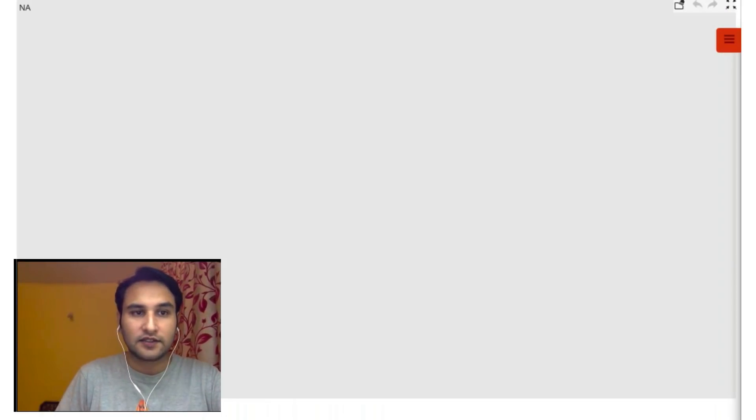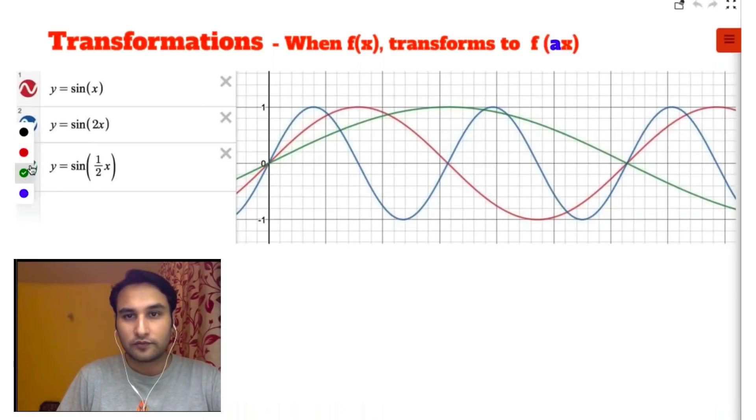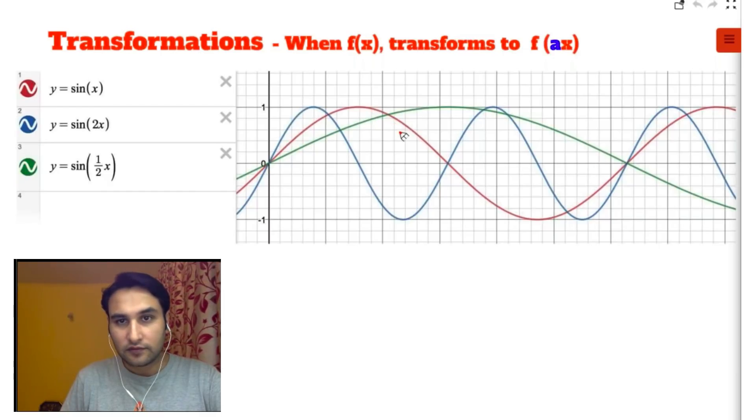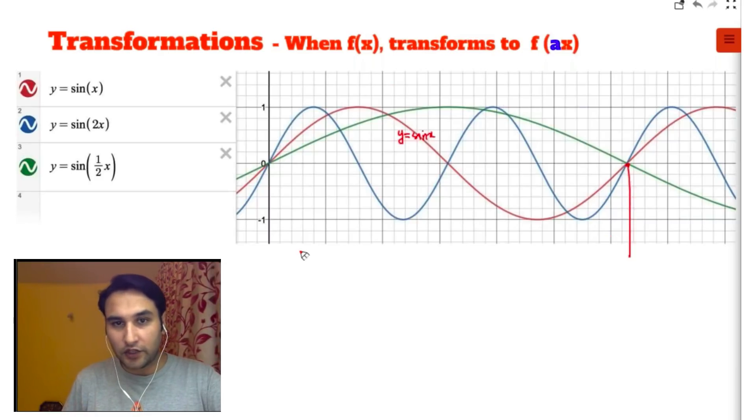Okay, this is the most important case, guys. This is what I wanted to come to. So the red graph is sine x. It is completing its one cycle at 2π.